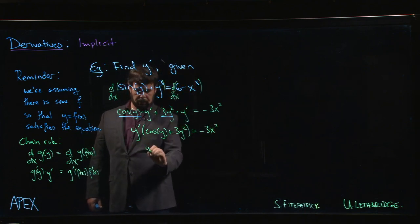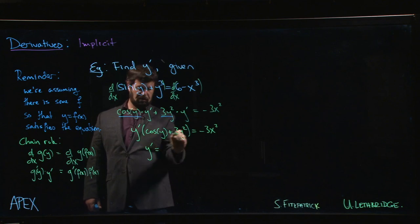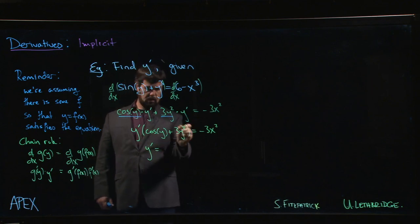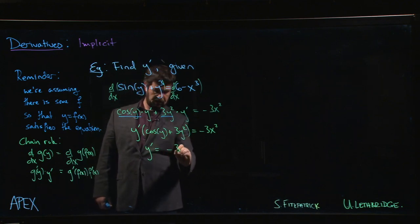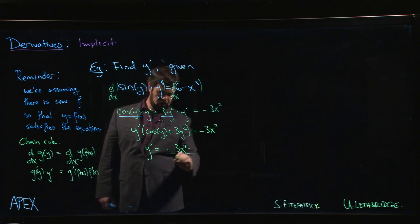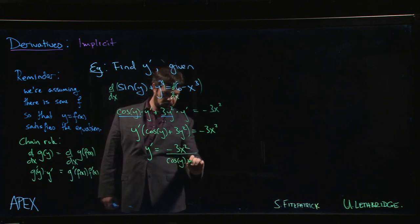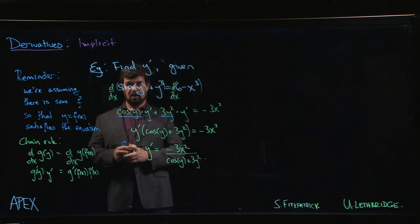And so finally, to solve for y prime, we just have to divide by what's left over here. So we have minus 3x squared over cos y plus 3y squared. And then we're done.